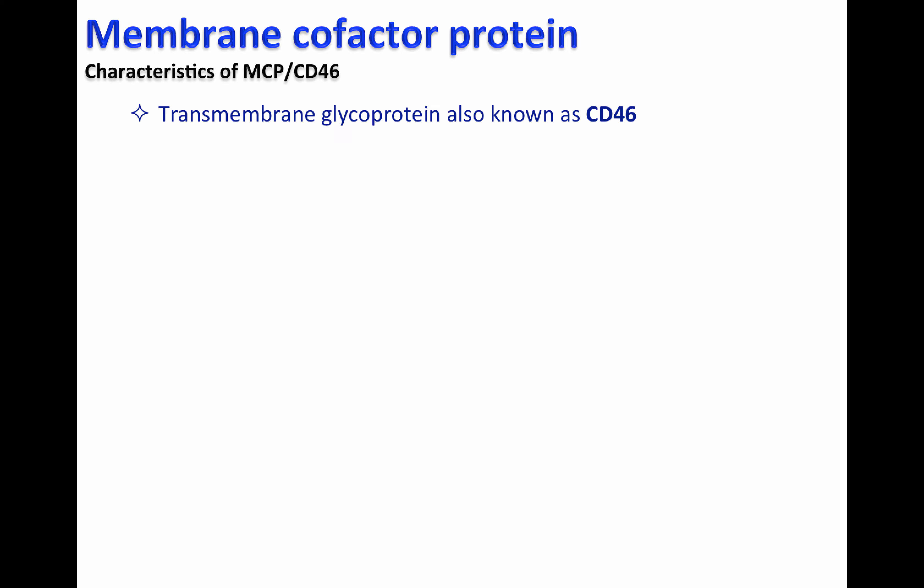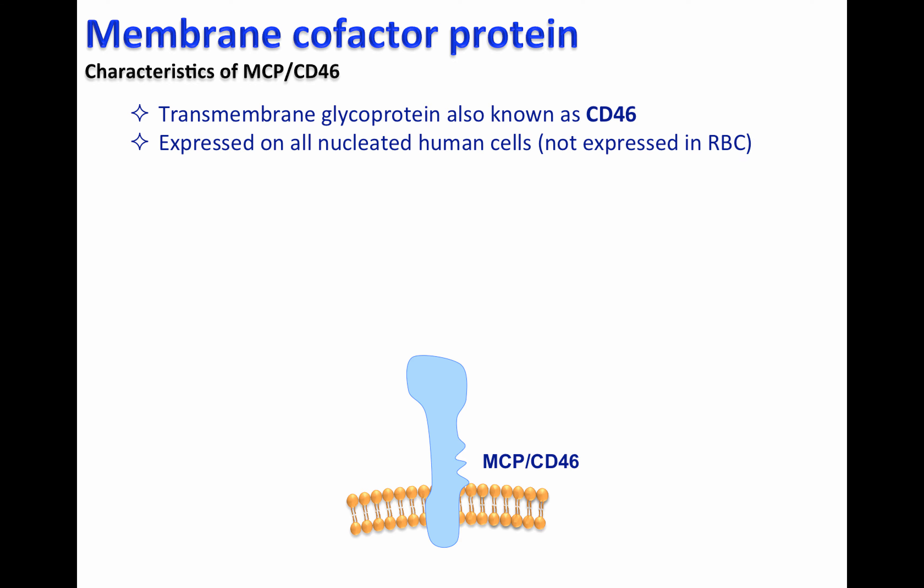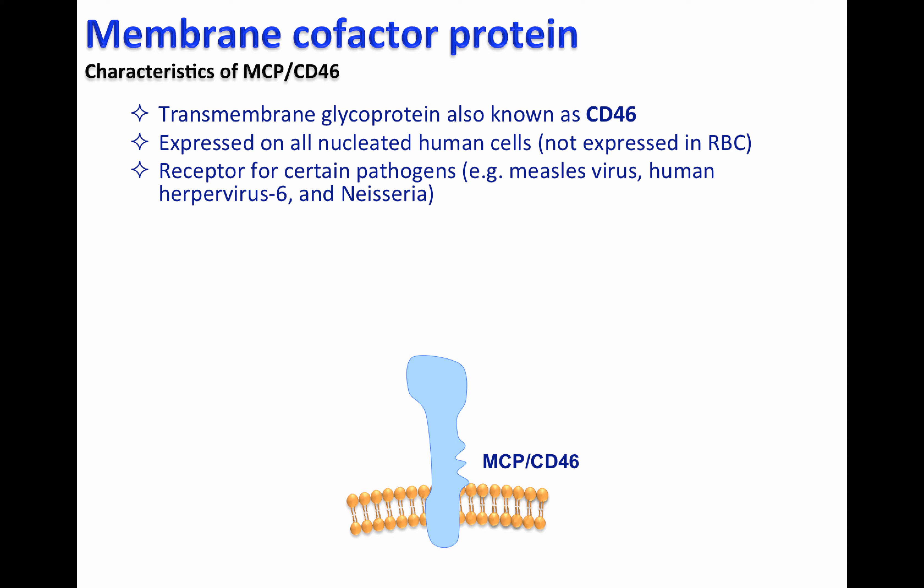Membrane cofactor protein or MCP is a transmembrane glycoprotein also known as CD46. CD46 is expressed on all nucleated human cells, and it has been shown that CD46 may be the receptor for certain pathogens including measles virus, human herpes virus, and Neisseria.